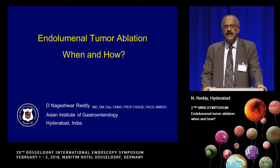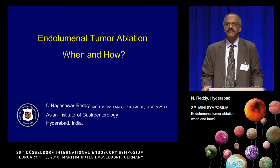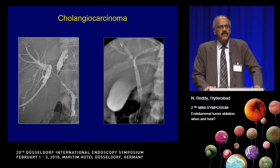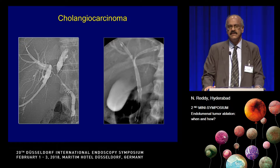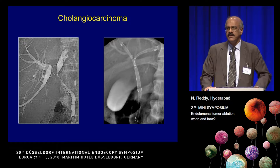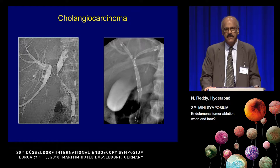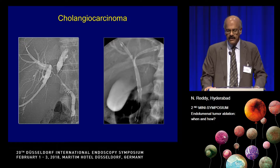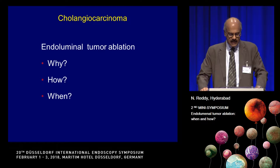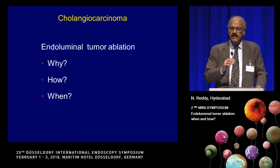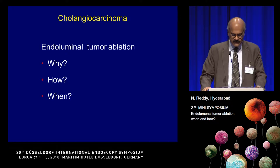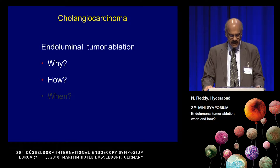Endoluminal Tumor Ablation: when and how. This is the final frontier for palliation of cholangiocarcinoma. Unfortunately, most patients with cholangiocarcinoma present at a stage where they are not operable, so they end up with palliation — putting stents, unilateral or bilateral, metal or plastic, to decrease jaundice and improve quality of life. The questions today are three: when, how, and why we should use endoluminal tumor ablation.